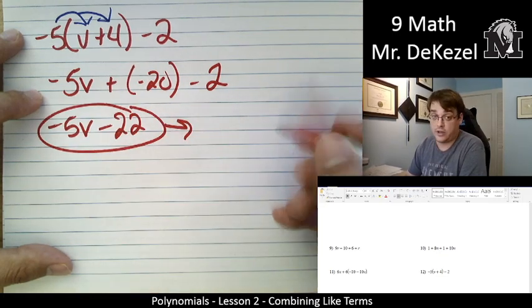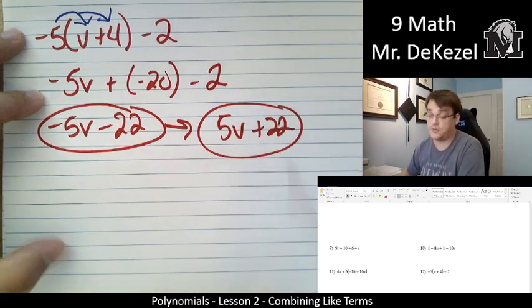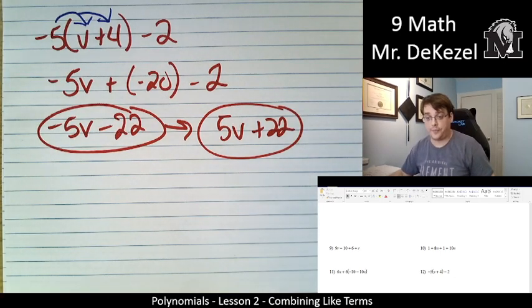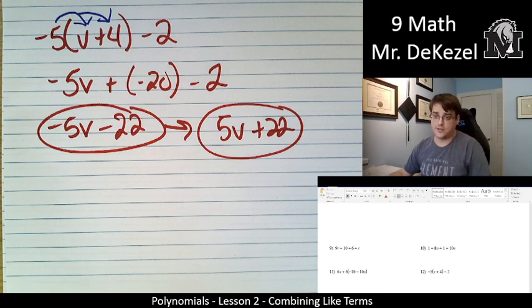Or if we want it all in positive terms, 5v plus 22 is all right as well. If you guys have questions, if you're not sure how to distribute a number throughout the brackets, please let me know. Thank you very much for watching, everyone. I will see you soon.